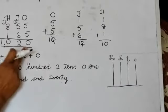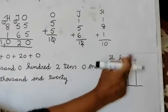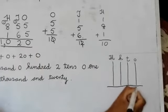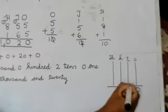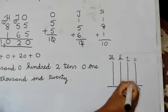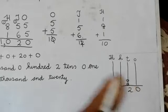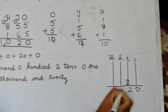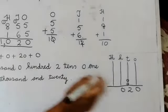Because now we have the answer in thousands, we will write down 1000, 100, tens, and ones. Under ones there is nothing, so we will put 0. Under tens we have 2. Under hundreds there is no number, so we put 0. And in thousands, 1.